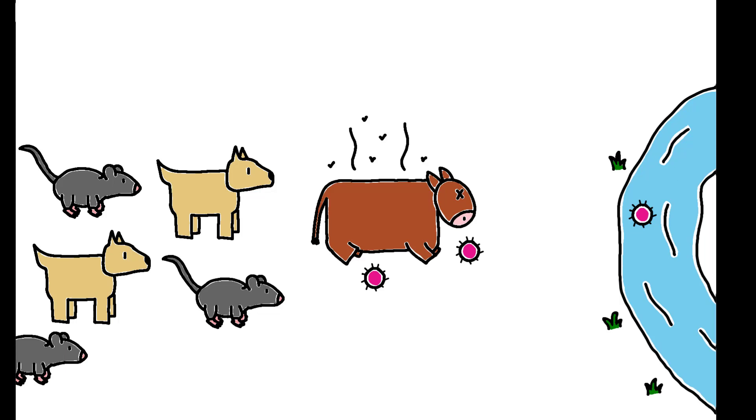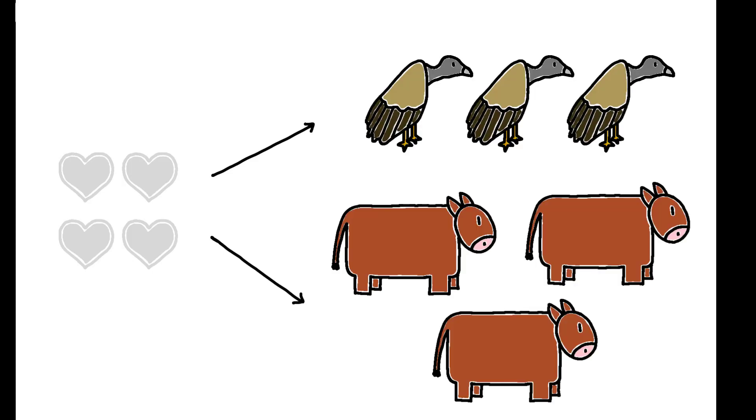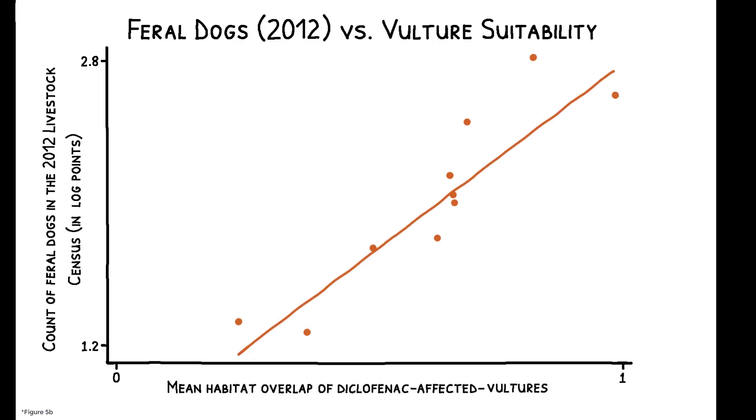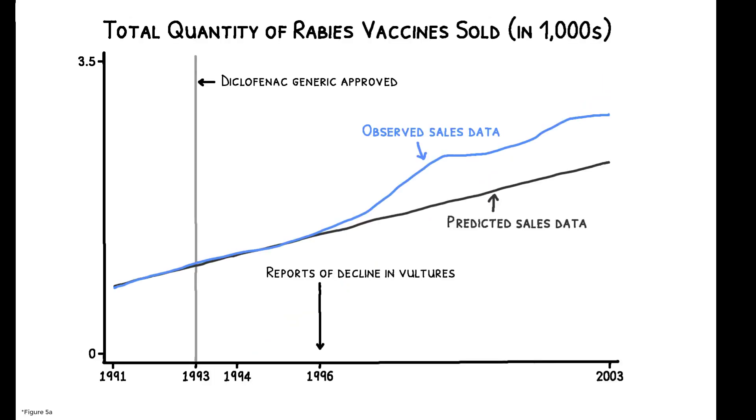Consistent with this sanitation channel, the estimated mortality effects are concentrated in areas that had both vultures and large livestock populations, and there is suggestive evidence for the role of feral dogs. Data from 2012 show that feral dog populations are higher in districts with high suitability for vultures, and national data on sales of rabies vaccines show a marked increase after 1996. There is also evidence of worse water quality in districts affected by the disappearance of vultures after their collapse.